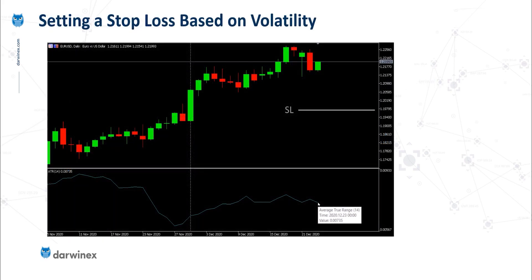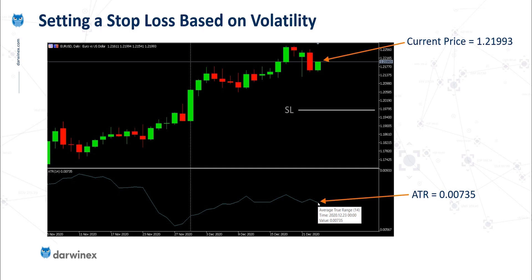Let's say we're going to trade this instrument long, so we need to set our stop loss below the price, as you can see here. When using a volatility-based stop loss, we need to look at what the current price is. We can use the ATR to give us an indication of the volatility. And if we're using a rule, for example, that sets the stop loss at three ATRs away from the price, then that can easily be calculated as shown here.